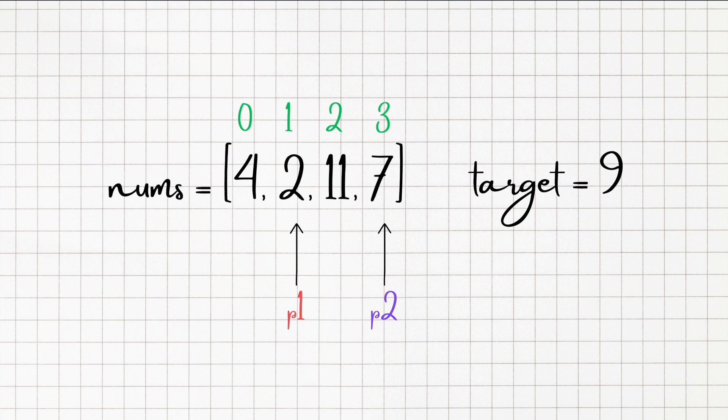But 2 plus 7 is 9, and we have found our target value. So we can return the indices of 2 and 7, which will be 1 and 3. So our output will be an array with these indices.